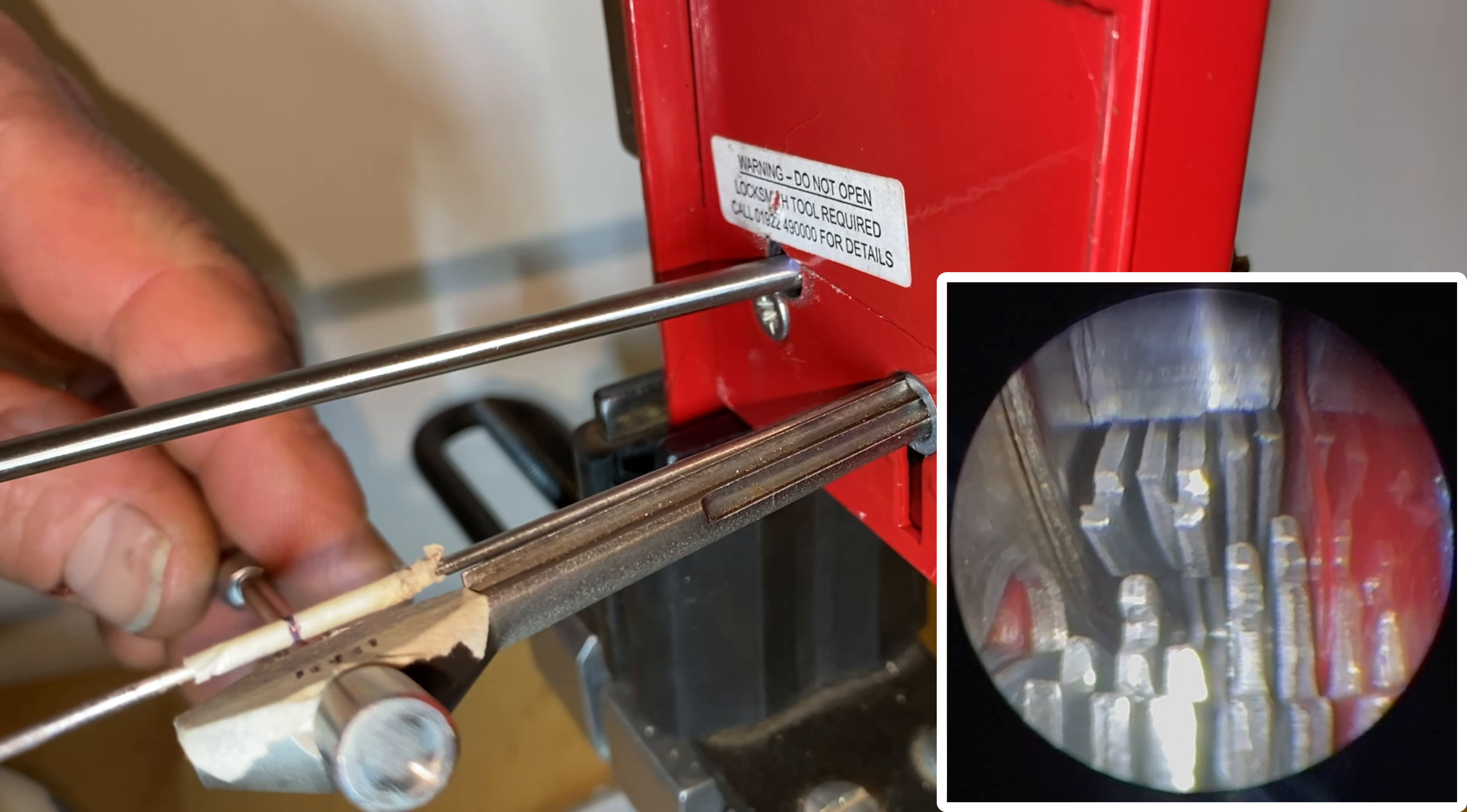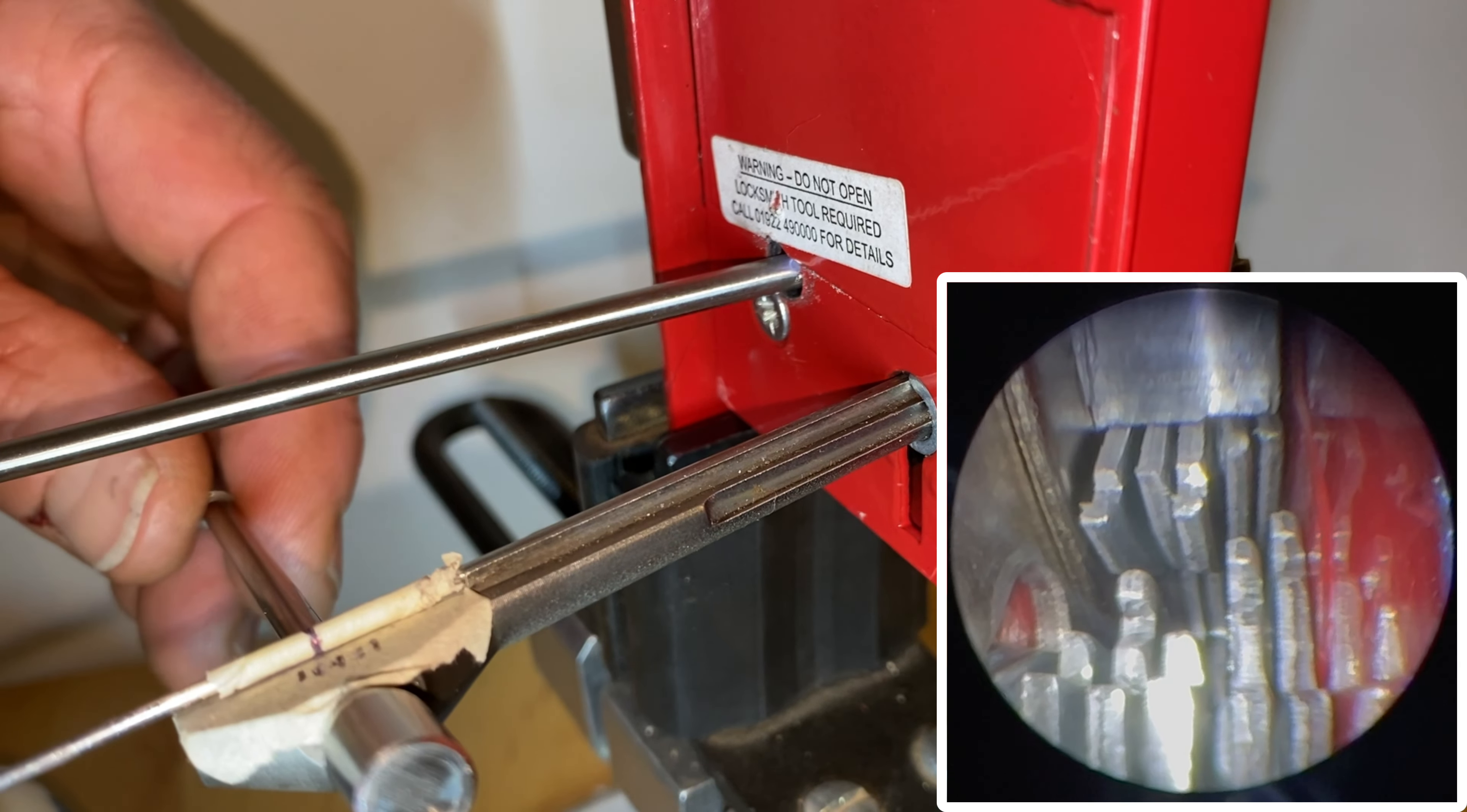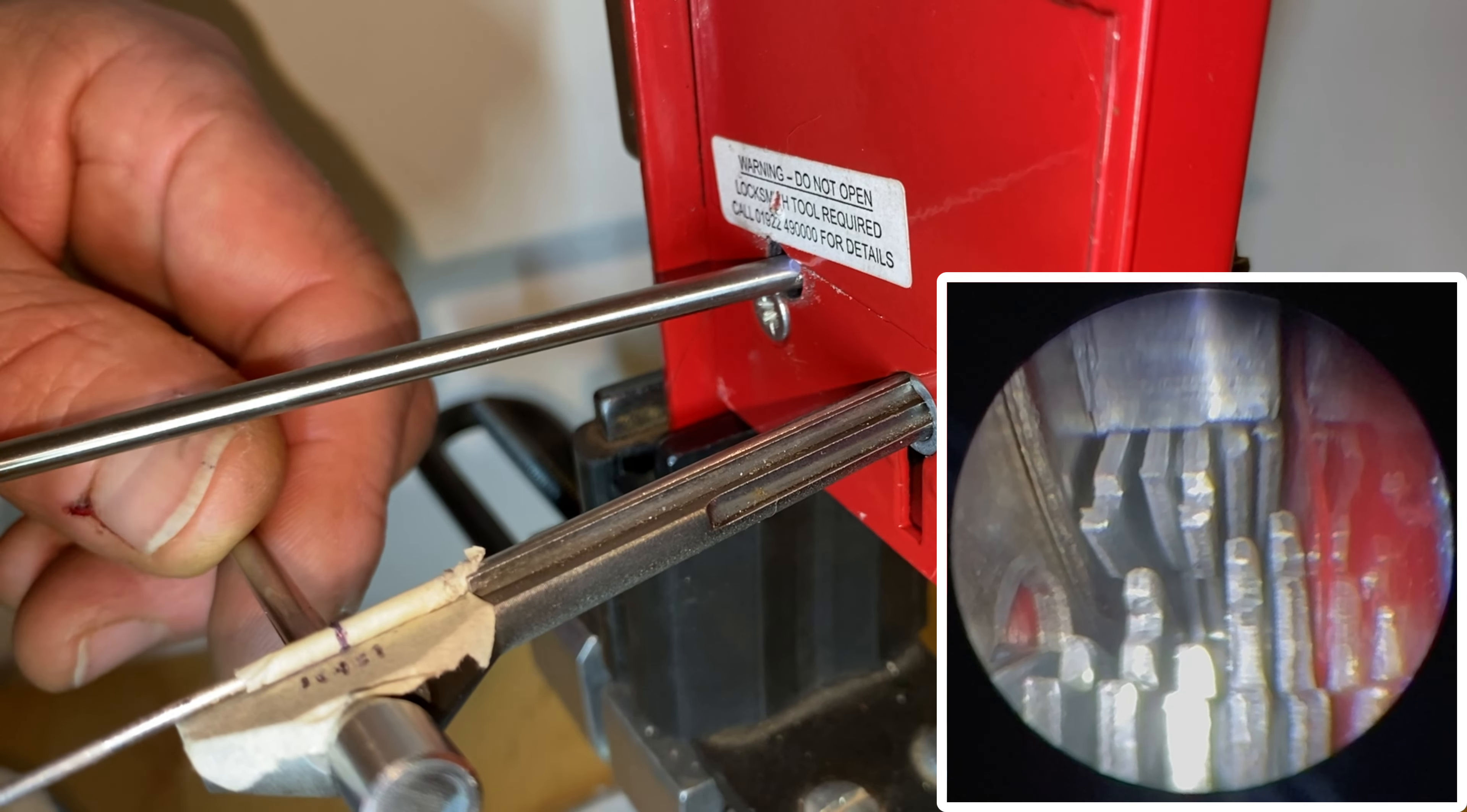If you look on the top of the picture of the internals, you can see the bolt stump moving up against the lever pack. The pressure of that bolt stump against the lever pack will be binding the levers that need to be picked first.